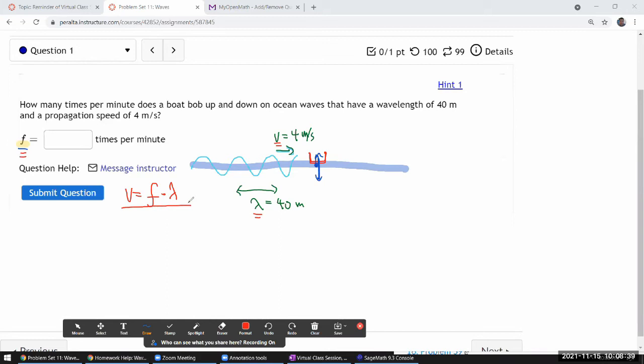The easiest way, or the best way I remember this relationship is through the unit. The wave speed is given in unit of length per time.